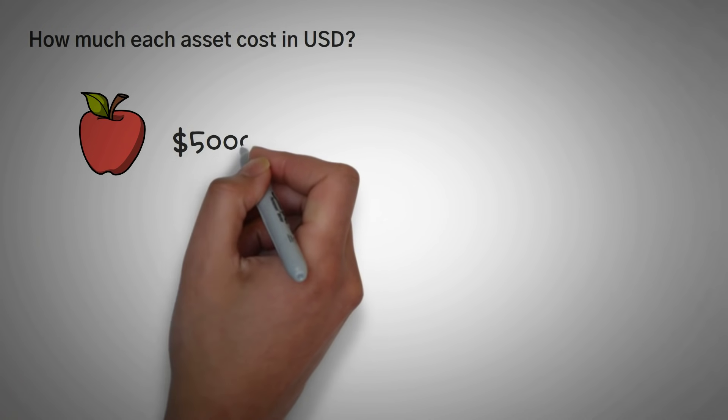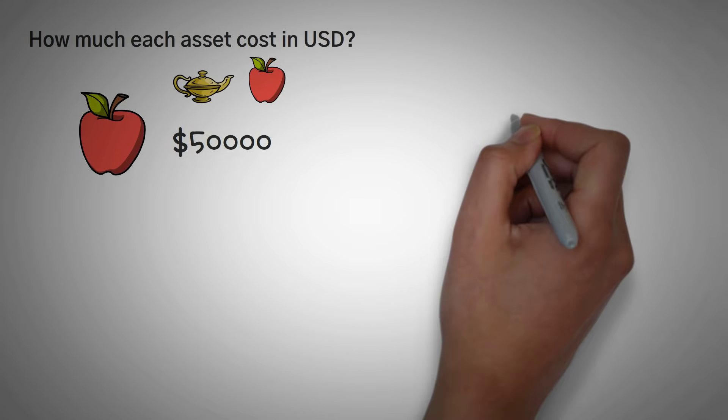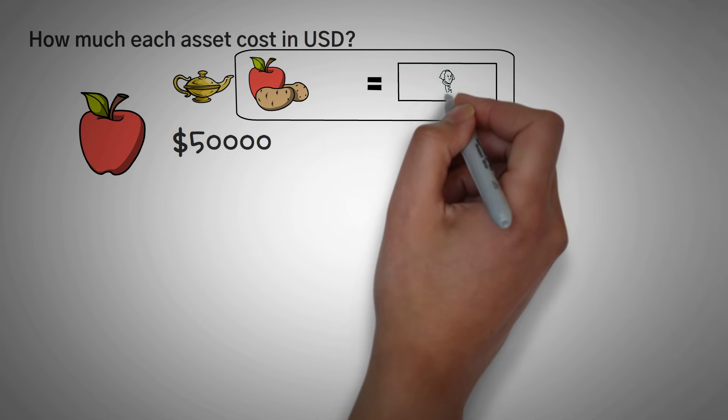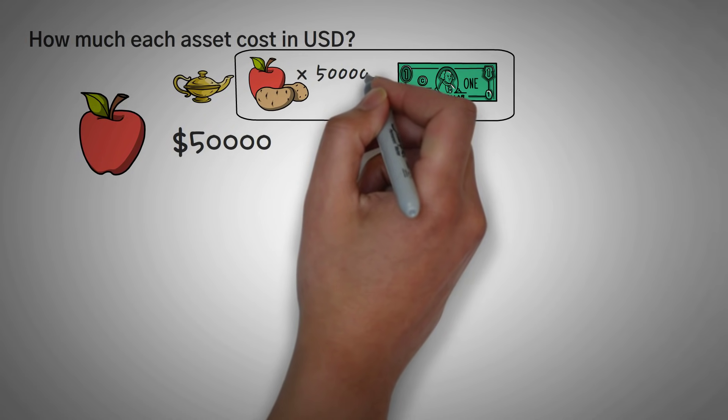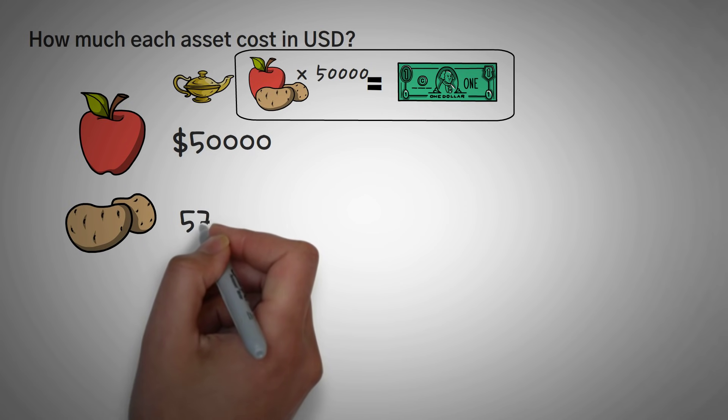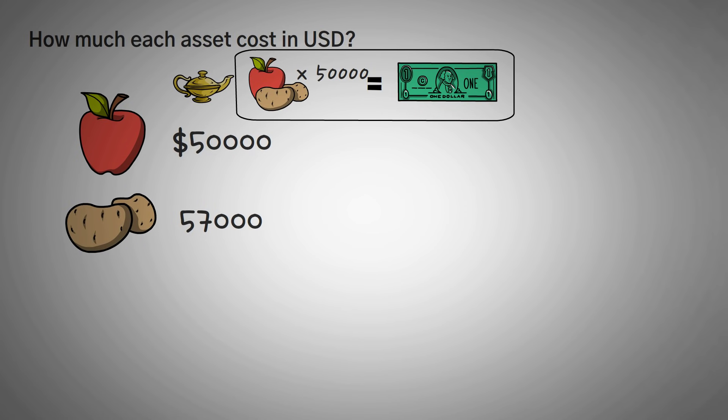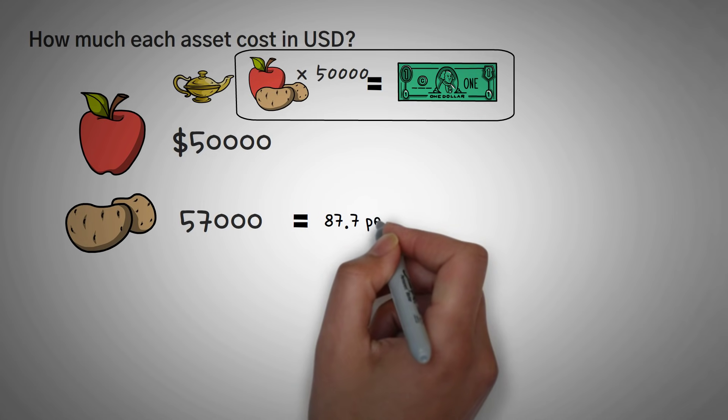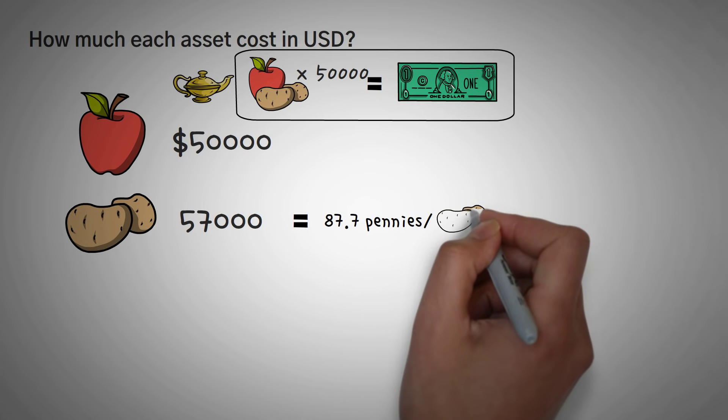So assume that there was 50,000 dollars worth of apples in the beginning, since the magical genie said he priced them at 1 dollar, and there was 50,000 of them, so we just need to keep 50,000 dollars as a constant when we're calculating their value. This is how much each asset should equal. So potatoes would be 50,000 dollars over 57,000, because that's how many potatoes we have, which brings their price to 87.7 pennies for each potato.